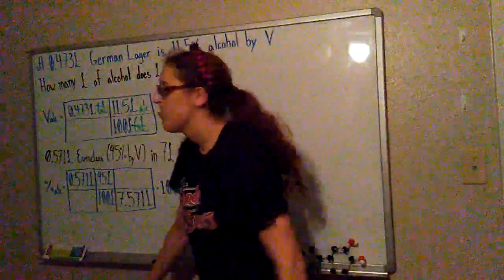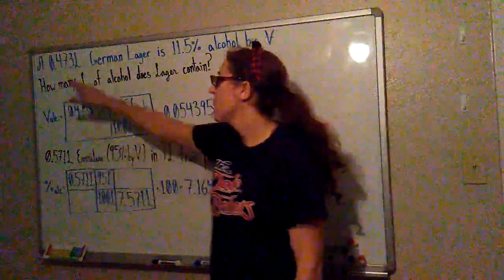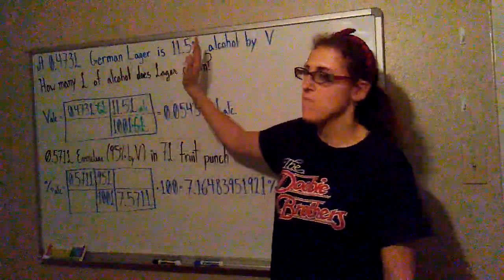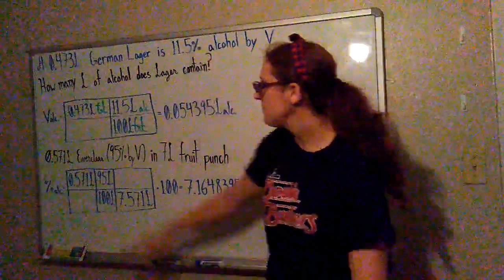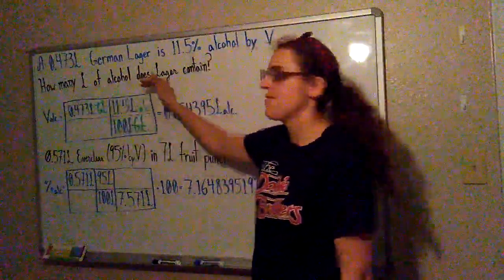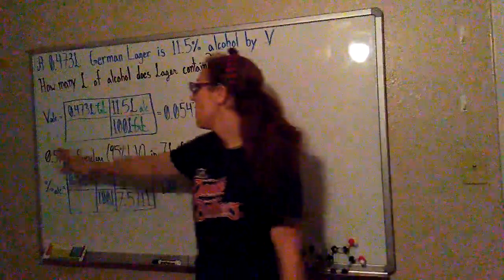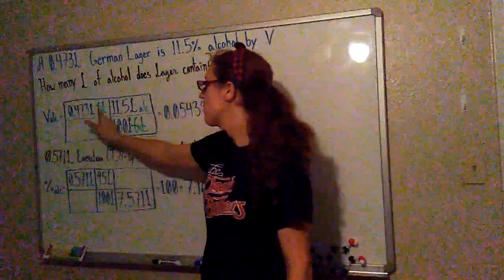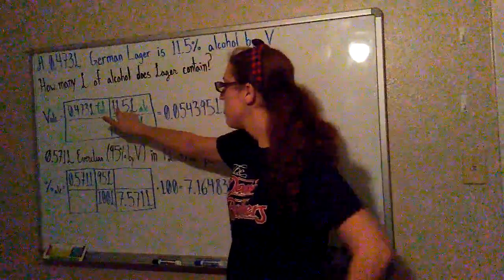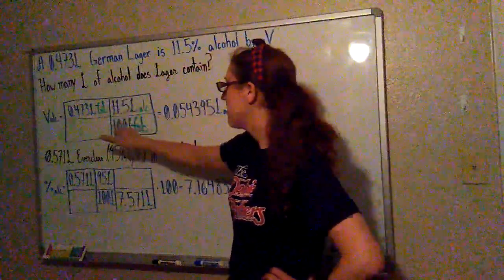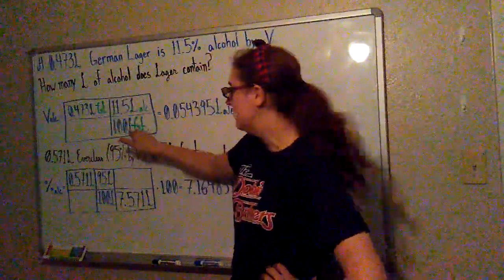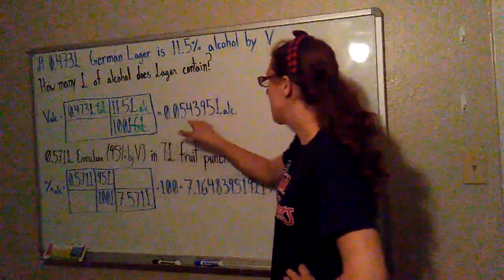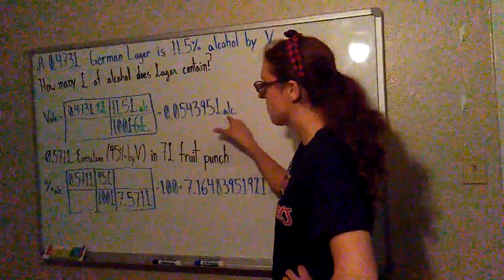Volume by percent. Let's say I go out and drink a 0.473 liter German lager that is 11.5% alcohol by volume. How many liters of alcohol does the lager contain? The volume of alcohol would be 0.473 liters of German lager times 11.5 liters of alcohol for every 100 liters of German lager, which gives us 0.054395 liters of alcohol.